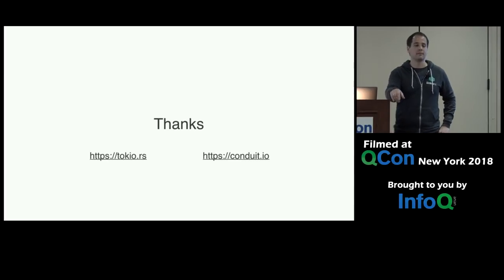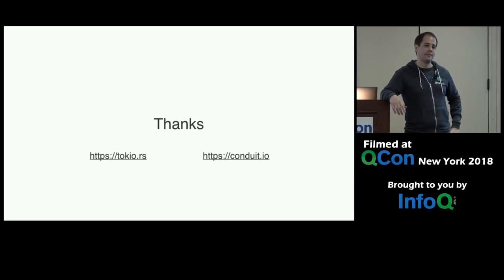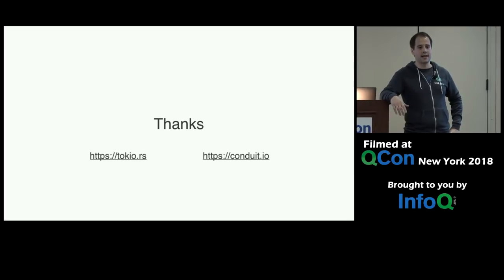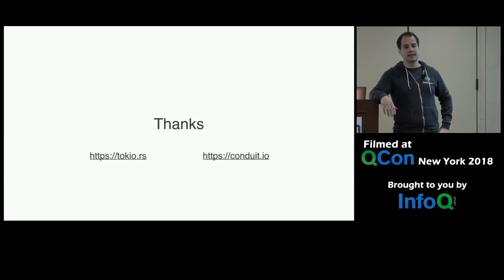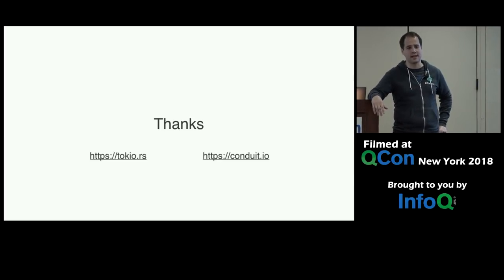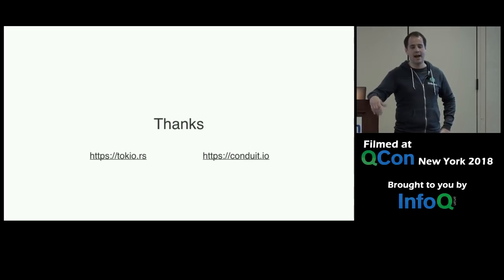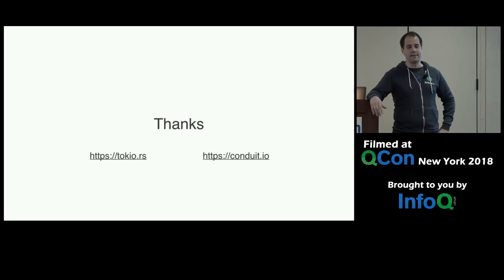Your examples use epoll a lot — do you support kqueue, epoll, select, all that? Yeah, it supports all of them basically: kqueue, IOCP, others. There's an abstraction — Mio is actually the Rust abstraction over all of that. I just say epoll because it's easier. So yes, it supports all of it.